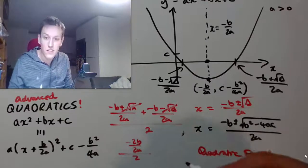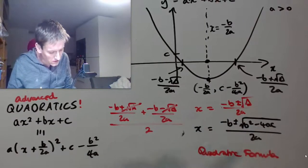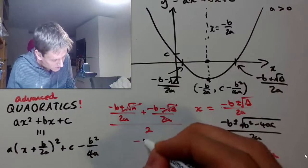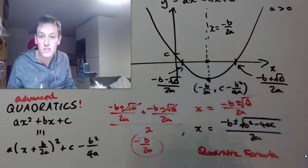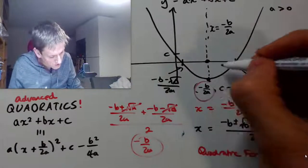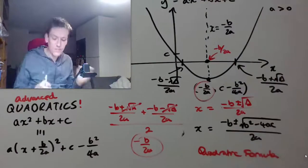Okay. So I just end up with, well the 2's here cancel, but then the 2 comes back in. So I just end up with minus b over 2a, which is the x coordinate of this turning point.